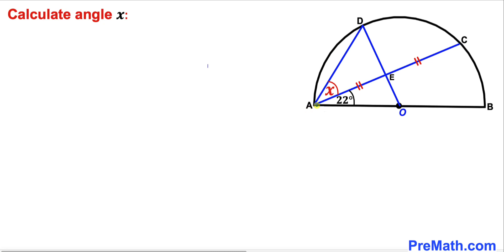Welcome to PreMath. In this video we have a semicircle with center O such that angle BAC is 22 degrees, and moreover line segment AE equals line segment EC. We are going to find the value of angle X.